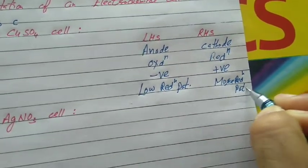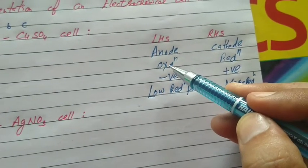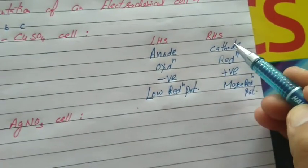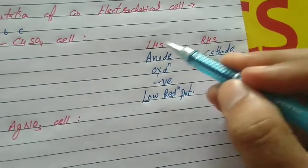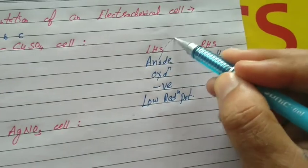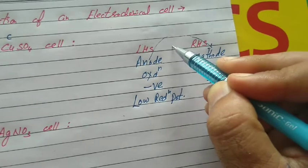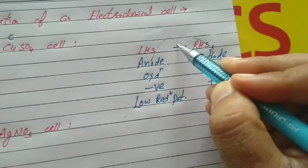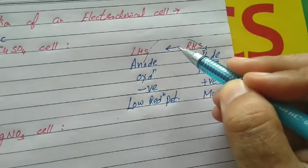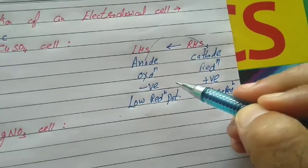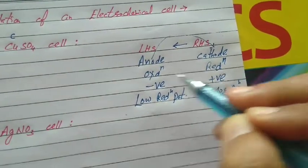At anode, oxidation occurs — that is, loss of electron. At cathode, reduction — that is, gain of electron. In the electrochemical cell, electrons move from anode to cathode. By convention, in the opposite direction — that is, from cathode to anode — that is the direction of electric current. Chemical energy is converted into electrical energy by indirect redox reaction; oxidation and reduction take place in two separate vessels.